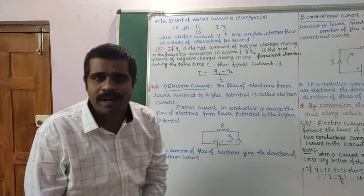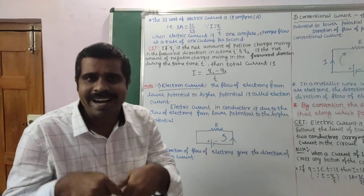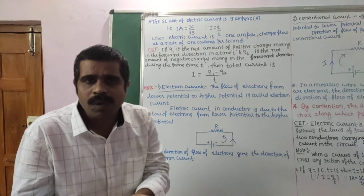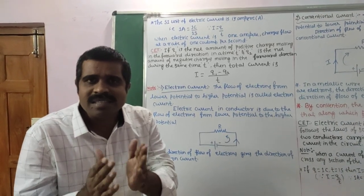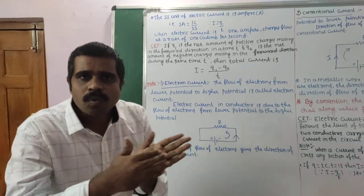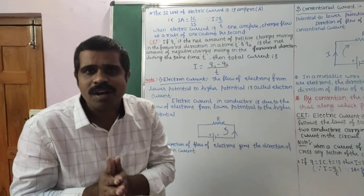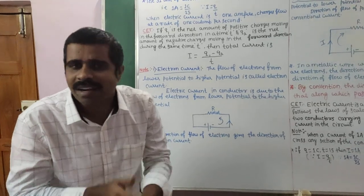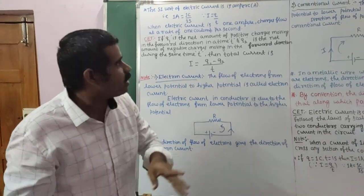We have the formula I is equal to Q by T. Where Q is there, you put 1 coulomb. Where T is there, you take 1 second. And hence we can say 1 ampere is equal to 1 coulomb per second. 1 ampere is that current flowing through a conductor if charge of 1 coulomb flows per second — at the rate of 1 coulomb per second.